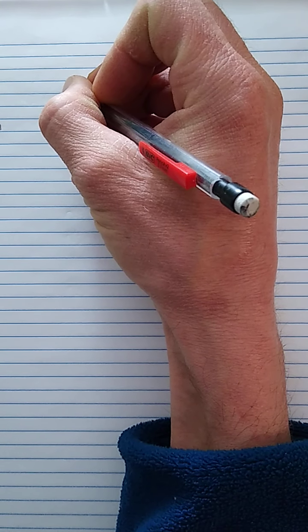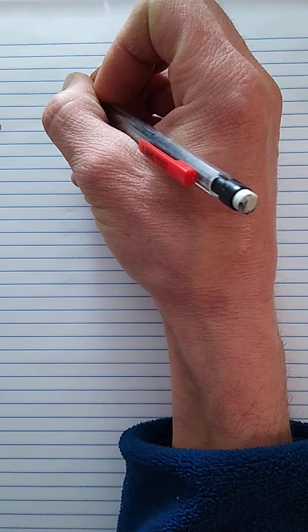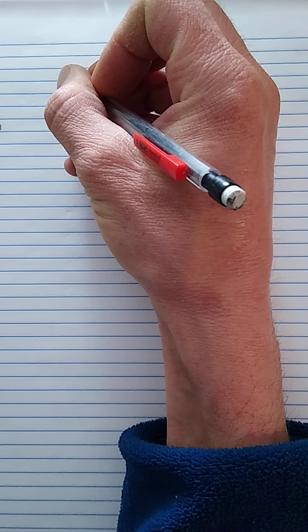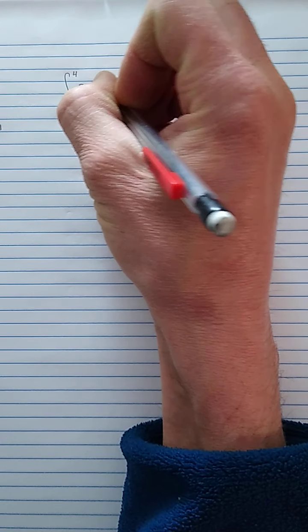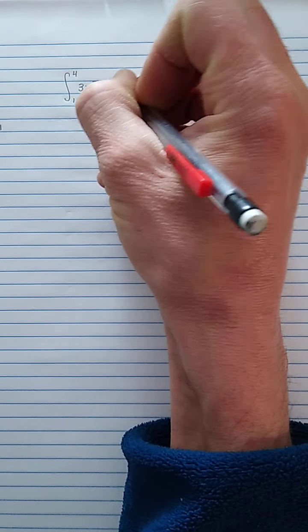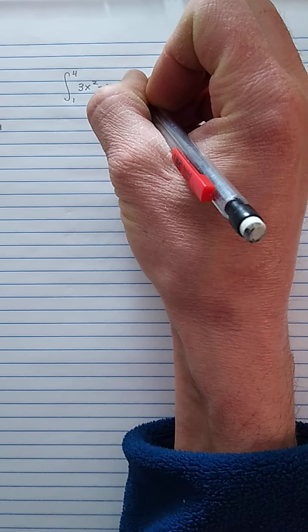In lieu of that, let's do a Riemann sum. So if we wanted to use the Riemann sum or the definition of an integral to figure out what is the integral from 1 to 4 of the function 3x squared minus 4x plus 2.